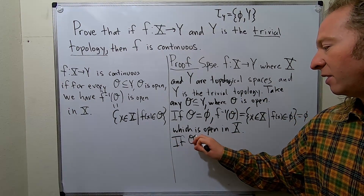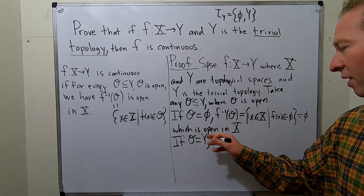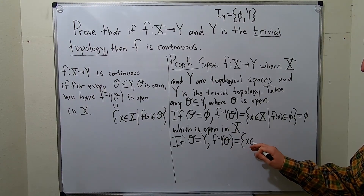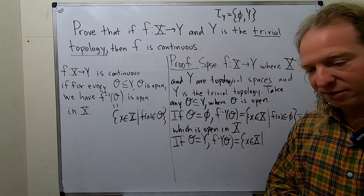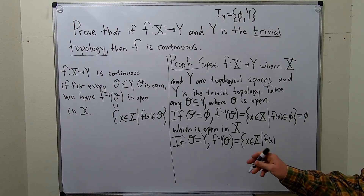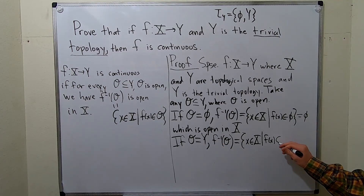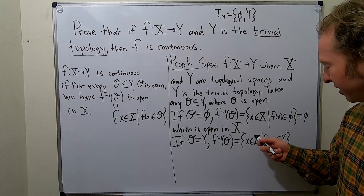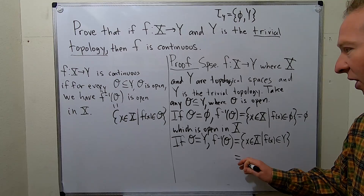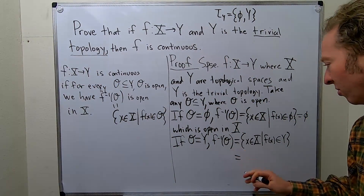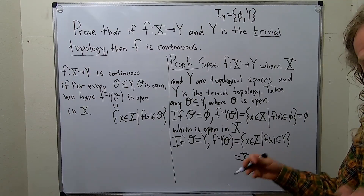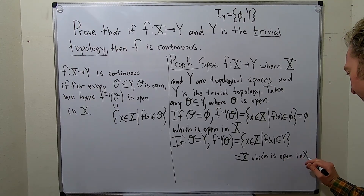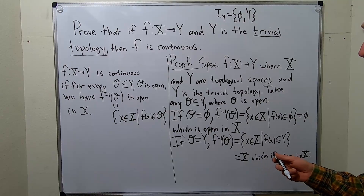The other case is if O is equal to Y. Then we look at the inverse image of O: it's the set of all x in X such that f(x) is in O, but O is Y, so f(x) is in Y. This is all x's such that f(x) is in Y — well, that's every single x, by definition of a function. Every single x gets mapped into Y. So this is going to be the entire space X, and this is also open in X.